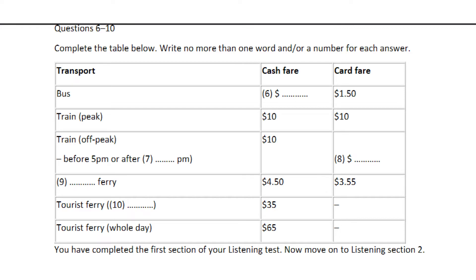Is there anything else I can help you with? Actually, there is — do you know if I can use the travel link card on ferries? If you're thinking of the Harbour City ferries that go back and forth between the north and south bank, those are the commuter ferries. Yes, a one-way trip costs four dollars fifty, but with your card you'd make a twenty percent saving and only pay three dollars fifty-five.